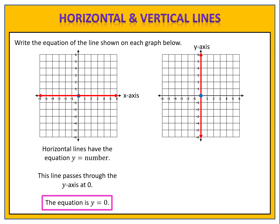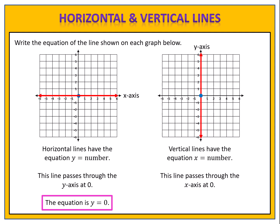Next we look at the vertical line that is the y-axis. Vertical lines have the equation x equals a number. The line passes through the x-axis at 0, so the equation is x equals 0. The equation of the y-axis is x equals 0, because x equals 0 means all points on that line have an x-value of 0, and any point on the y-axis is 0 comma some number.